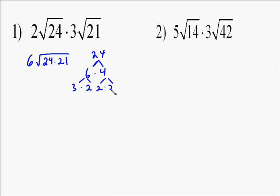What we do is factor 24, which I'm doing over there on the right. 24 is 6 times 4, then 6 is 3 times 2, and 4 is 2 times 2. Then we factor 21.